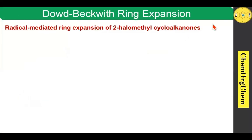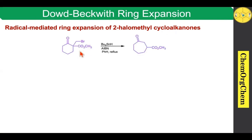Another important application is the Dowd-Beckwith ring expansion reaction. According to this, radical-mediated ring expansion of 2-halomethyl cycloalkanone is called Dowd-Beckwith ring expansion. Here you see this example: 2-bromomethyl cyclohexanone. When you use tributyltin hydride and AIBN, which produces the seven-membered ring system. Let's see the mechanism.